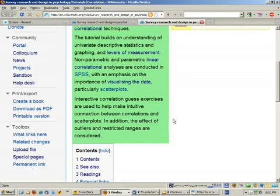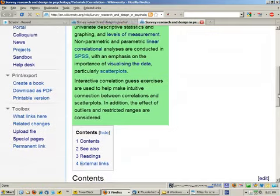And finally, we'll look at the effect of outliers and restricted ranges in correlational analysis.